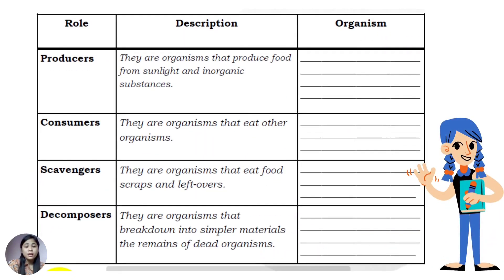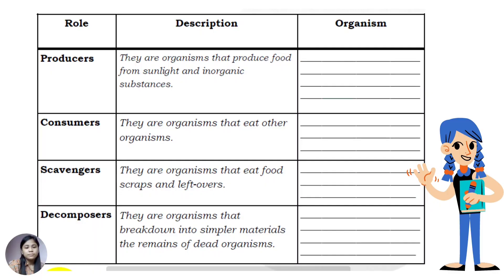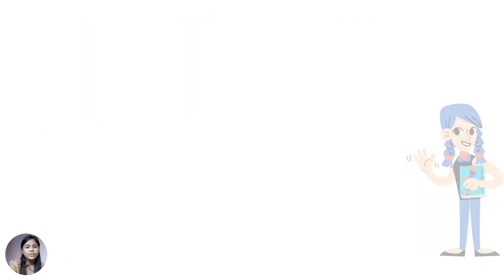This is the table where you need to answer the organism for each role. Producers are organisms that produce food from sunlight and inorganic substances. Consumers are organisms that eat other organisms. Scavengers are organisms that eat leftover food and scraps. And decomposers are organisms that break down the remains of dead organisms into simpler materials.